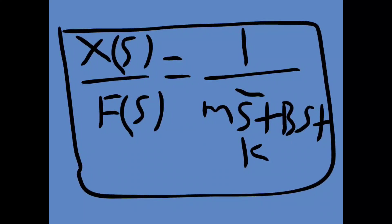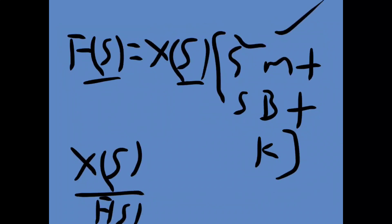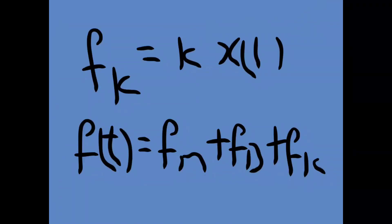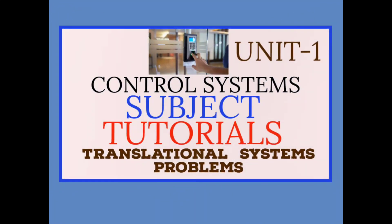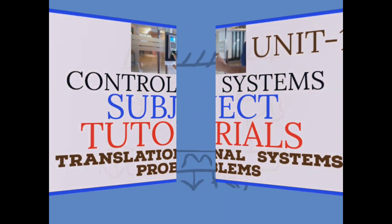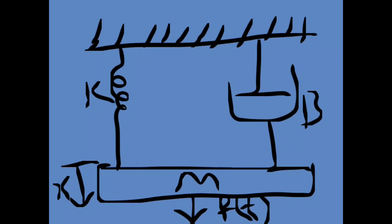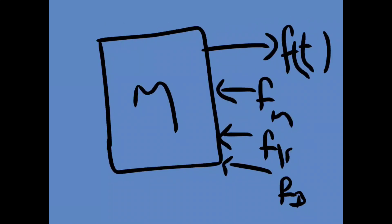So this is how we find it. In this video we discussed the translational systems problem. For the given problem, we need to find the transfer function. For that, we draw the free body diagram with respect to the mass element.